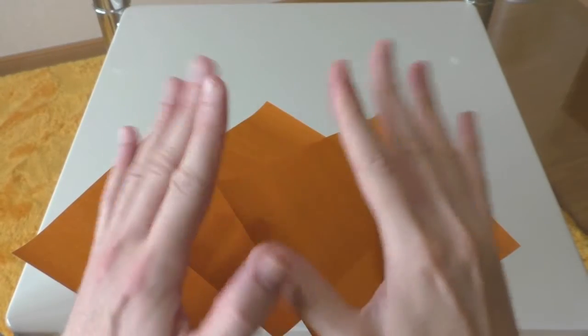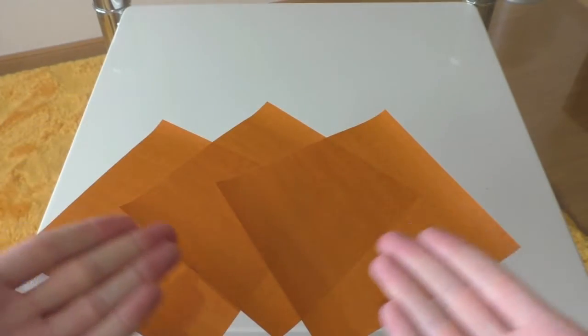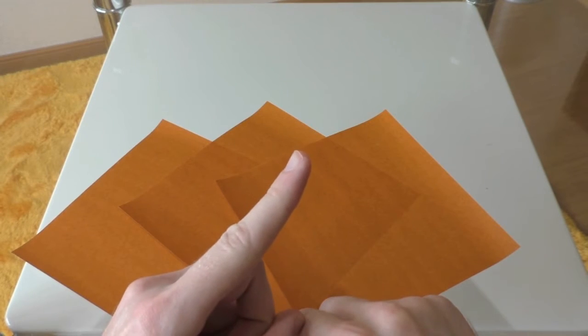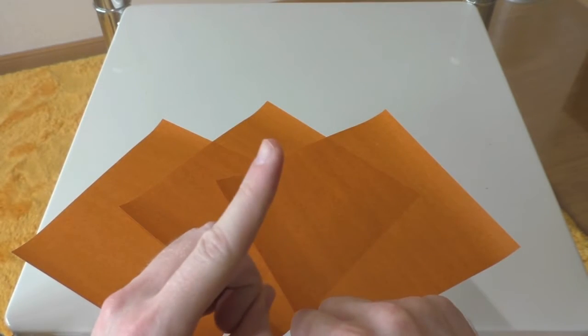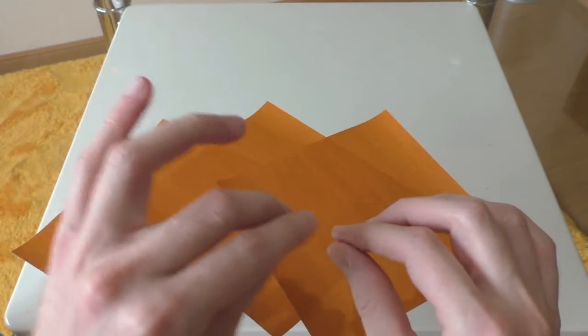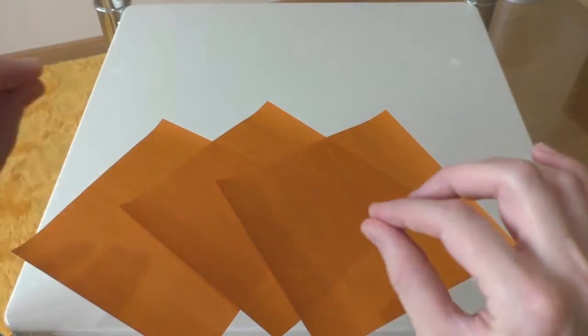Hello one and hello all and welcome to another origami adventure. We're going to continue from last time with our dinosaur theme and today we're going to be making the Brachiosaurus, the one with the big neck.